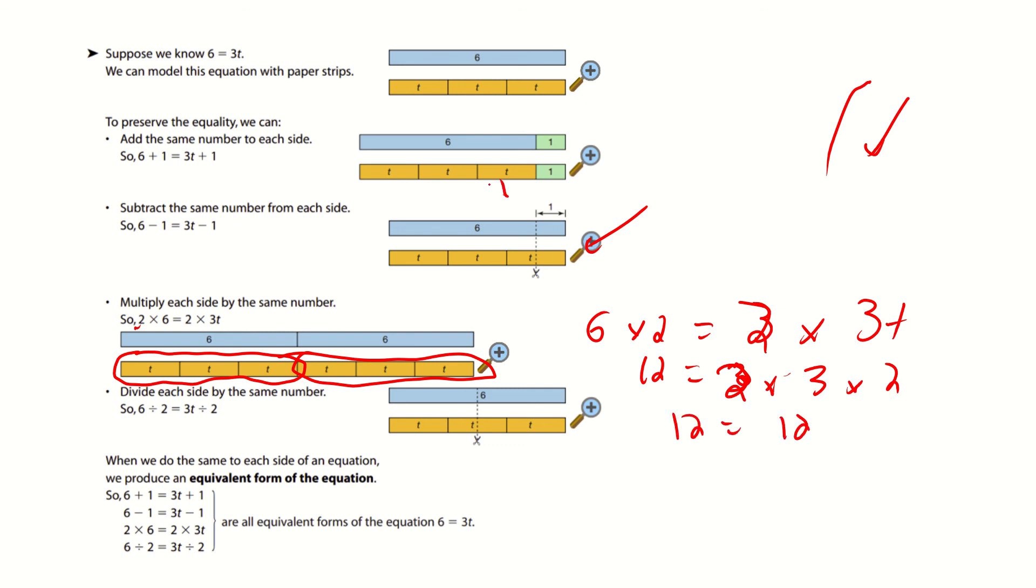Now, t isn't represented by 2 here, but I know that t is 2 in this case because 3 times 2 is 6. We want to find the equal equations. Finally, divide each side by the same number. So, we have 6 divided by 2 equals 3t divided by 2. So, to write this as a visual, all you would do is you take 6 and you cut in half to get, obviously, 3. And here, what you would do is you'd cut the half of 3t, and you'd get 3 as well.